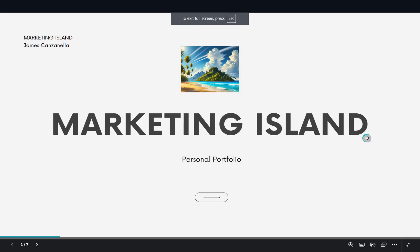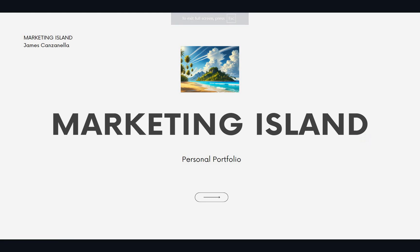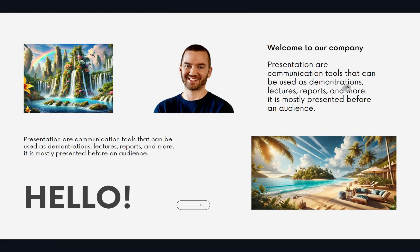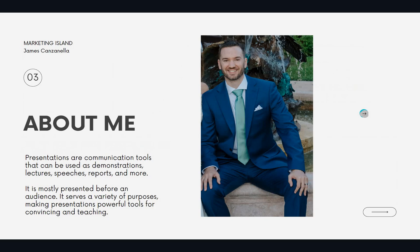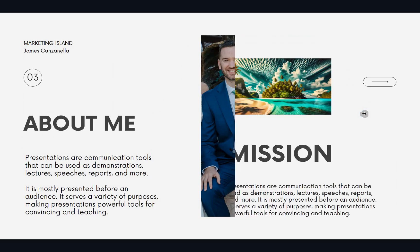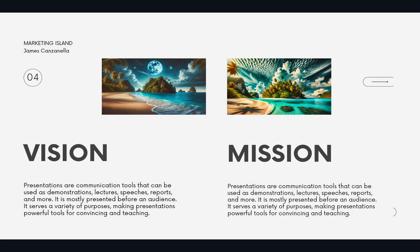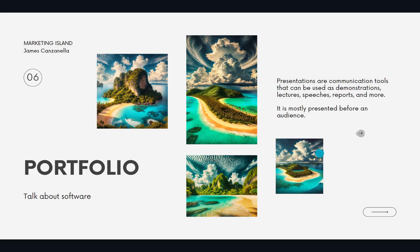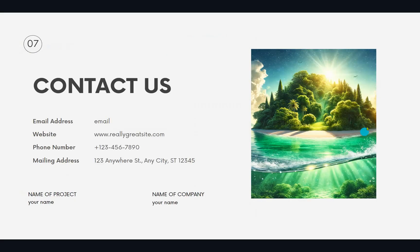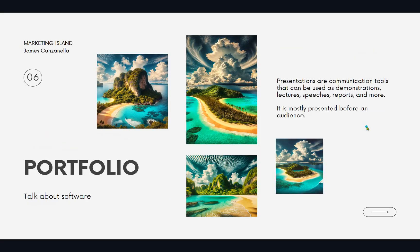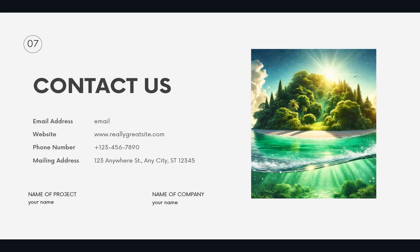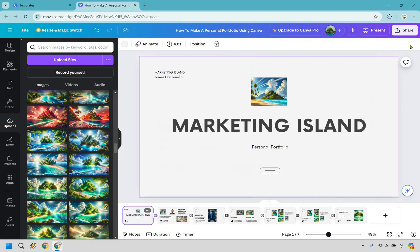Here we are — you can use your arrow keys left and right, or just click on the page. We have our next one — mission, portfolio — and this would probably be the biggest bulk of the section. There were two project pages, page five, page six, and the last one, and we are done.